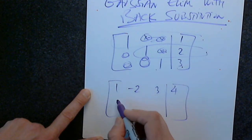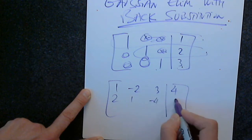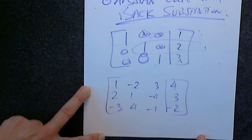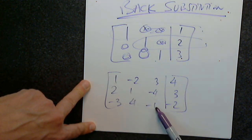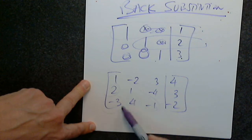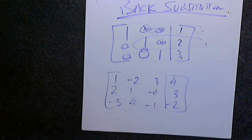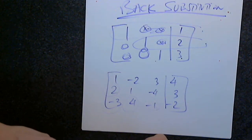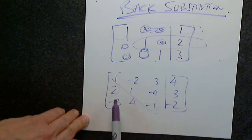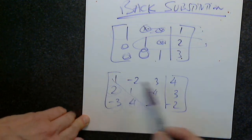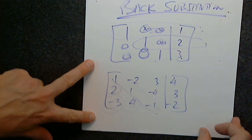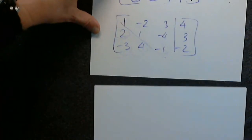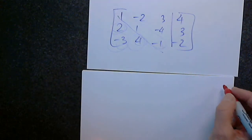The augmented matrix is: 1, negative 2, 3, 4 | 2, 1, negative 4, 3 | negative 3, 4, negative 1, negative 2. We only want 1s on the diagonal and 0s below. To eliminate the 2 in row 2, we multiply row 1 by negative 2 and add to row 2. To eliminate the negative 3 in row 3, we multiply row 1 by 3 and add to row 3.